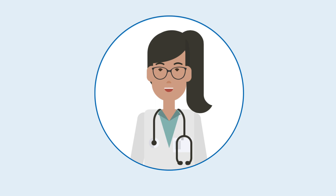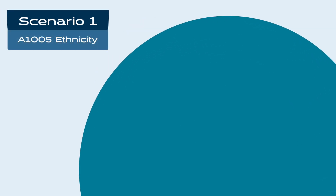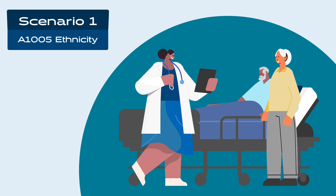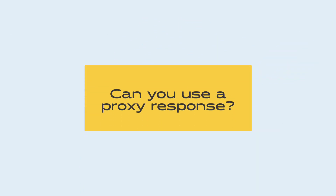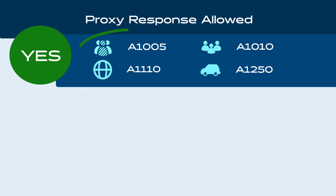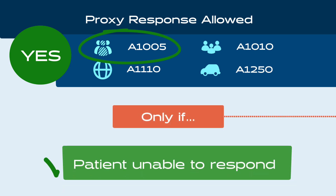Let's look at a few examples. For A1005 ethnicity, the patient is unable to clearly articulate a response due to aphasia. A proxy is present and clarifies the patient's intended response. Can you use this proxy response? Yes. A proxy response is allowed for A1005 ethnicity when the patient attempts to respond but is unable to provide a response.